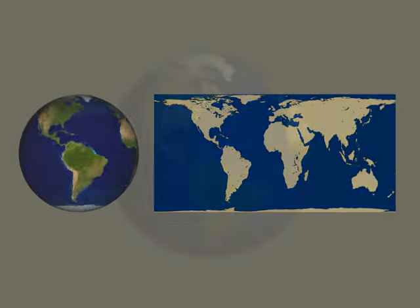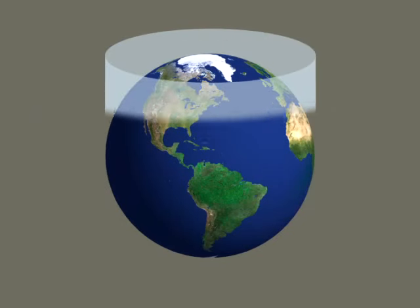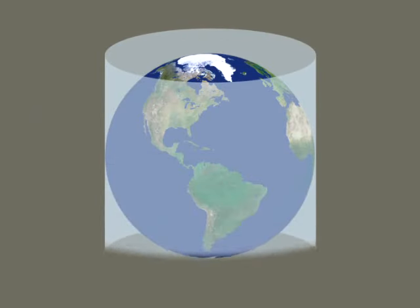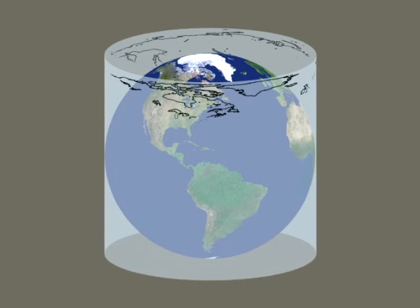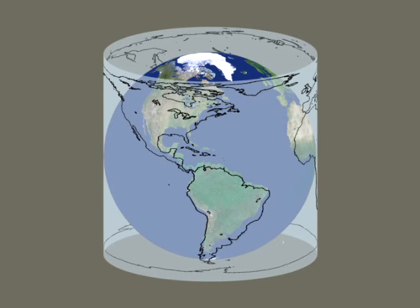The simplest map projection consists of surrounding Earth with a cylinder and having each point of its surface correspond to a point on the cylinder. This is called a cylindrical projection.